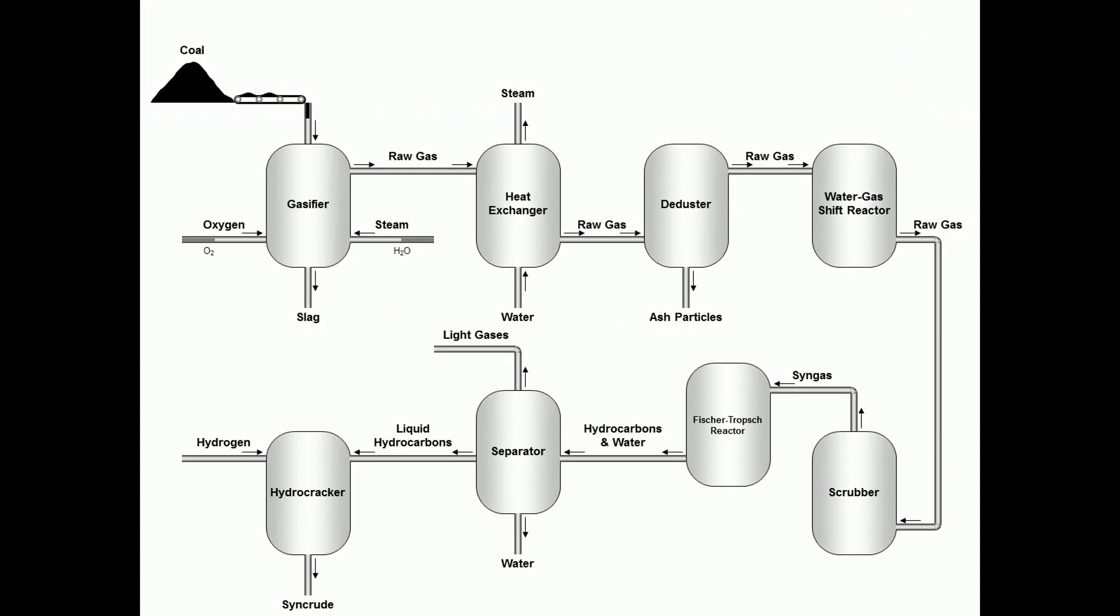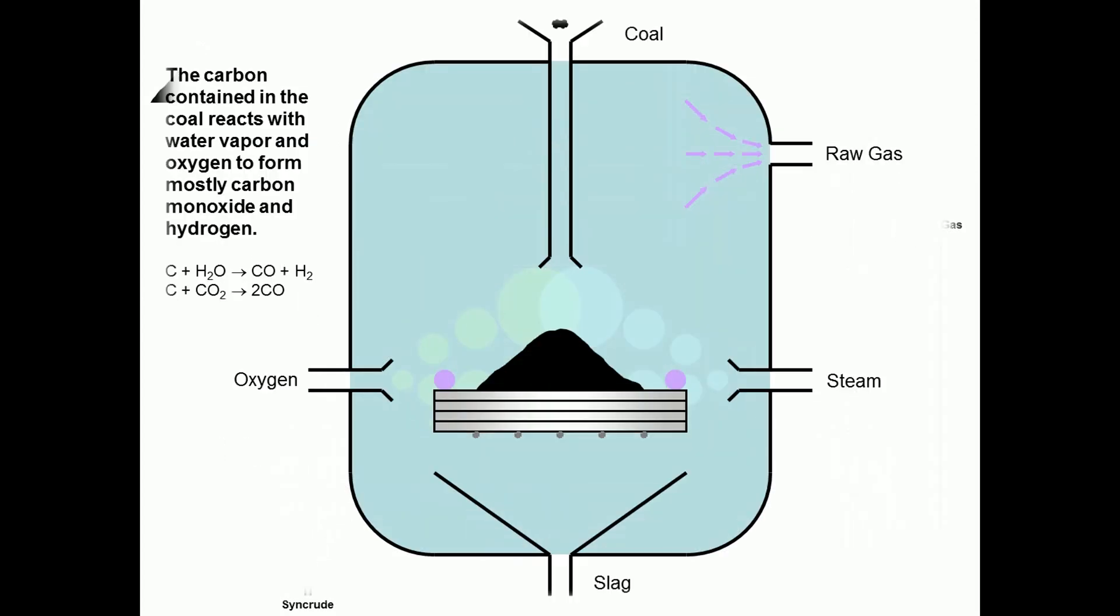In the first step, the dried and milled coal is sent into a gasifier for gasification. In the gasifier, the carbon, which is the main component of the coal, reacts with steam and oxygen to form mostly carbon monoxide and hydrogen. The formed raw gas exits from the top.